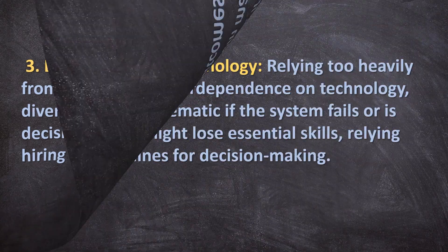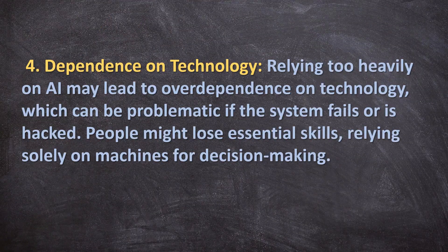Fourth is dependence on technology. Relying too heavily on AI may lead to over-dependence on technology, which can be problematic if the system fails or is hacked. People might lose essential skills by relying solely on machines for decision-making.